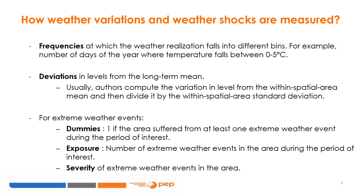When measuring deviations, authors often compute the variation in levels from the within-spatial-area mean and then divide it by the within-spatial-area standard deviation. In this approach, level changes matter not in an absolute sense but in proportion to an area's usual variation. For extreme weather events, different measures can be used according to the researcher's objective. We can use dummies to indicate if a drought, cyclone, or flood occurred in a specific year in a particular country or area — equal to one if the event occurred, zero if it did not.